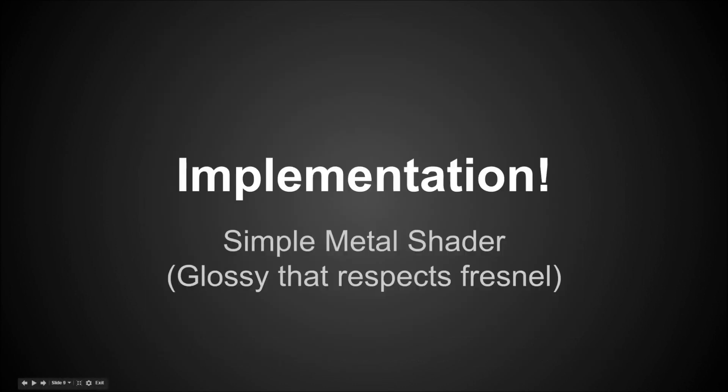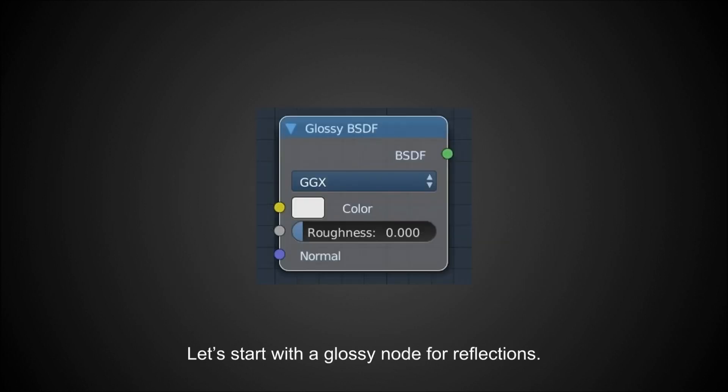So let's dive into the implementation. One of the first things we're going to need is a glossy shader, because metallics are mostly reflections. We're just going to take it as completely reflective, because honestly it's not even worth modeling the diffuse component — it would probably cause more problems than it would actually fix. So we're just going to start with a glossy shader to work with our reflections.